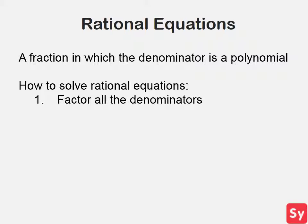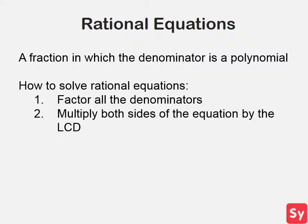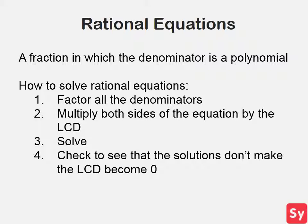First, we factor all the denominators. This helps us find the LCD, the lowest common denominator, and brings us to the next step. We multiply both sides of the equation by the LCD. Next, we solve for x. And lastly, we check the solutions by plugging them into the LCD. If it equals zero, then it's not a solution — it is considered an extraneous solution. Now let's see some examples.